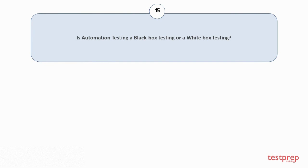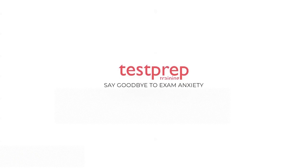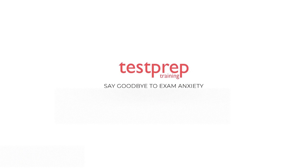Question number fifteen: Is automation testing black box testing or white box testing? Automated testing can be both black box and white box type, depending on the scenarios. It is black box testing when the tester tests the application without knowing the low-level design or code. But sometimes automated test scripts need access to database details, making it a type of white box testing as well. For more such videos, subscribe to our channel.